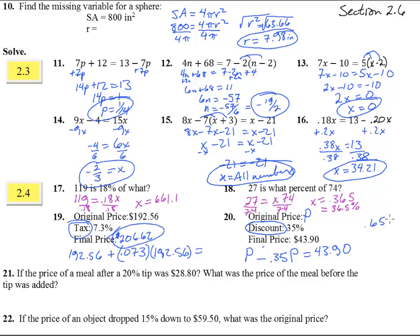So if we subtract those, we get 0.65P equals the 43.90. Divide by 0.65, and we get that P equals 67.54. And there we have it.